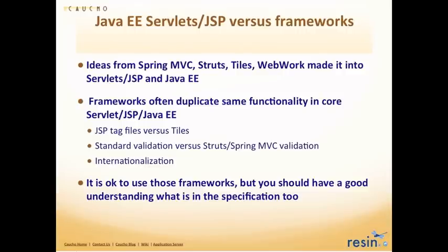Servlets 3.0 and JSP 2.2 were heavily influenced by frameworks like SpringMVC, Struts, Tiles, and WebWork. There were ideas in these frameworks that made it back into Servlets 3.0 and JSP 2.2. The frameworks often duplicate the same functionality that's now in the core, and at times what's in the core is actually better than what's in these frameworks, or there are just two ways to do the same thing. We're going to cover the way it's done in the core, which is Servlets 3.0 and JSP 2.2, Java EE6.